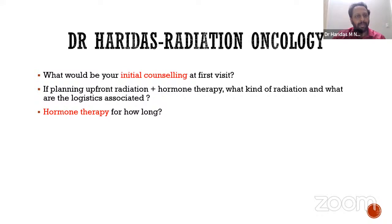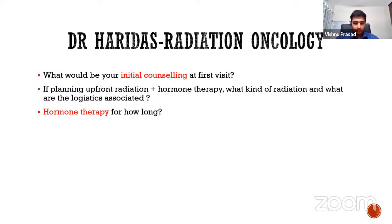When we start hormone treatment, given his obstructive symptoms, we would consider an LHRH antagonist as an initial option and reassess periodically. He is not in urinary retention, so we can monitor him closely. If urinary obstructive symptoms are predominantly disease-related, the first few months of hormone treatment itself would produce a dramatic improvement. If symptoms don't improve, we would need to think about whether a TURP is needed before embarking on radiation treatment.